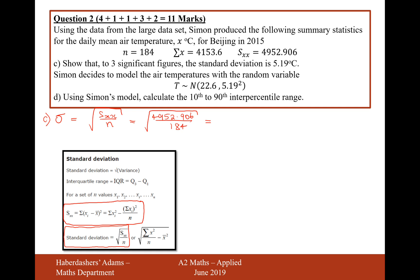If we do that in the calculator, let's just grab our calculator square root button, fraction button, 4952.906 divided by 184, that gives us 5.188 which is equal to 5.19 to two decimal places.